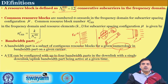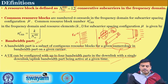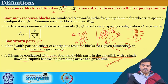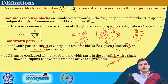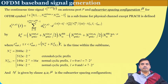A UE can be configured with up to 4 bandwidth parts in downlink, with a single downlink or uplink bandwidth part being active at a given time. So although the entire bandwidth can be divided into 4 parts from the UE perspective, only one can be utilized at any one instant. This makes things easier from the UE implementation point of view.